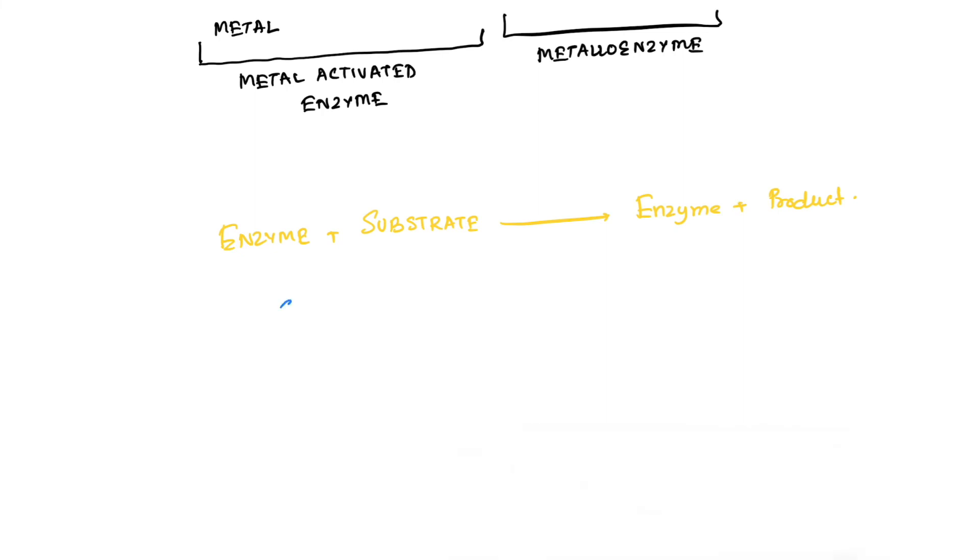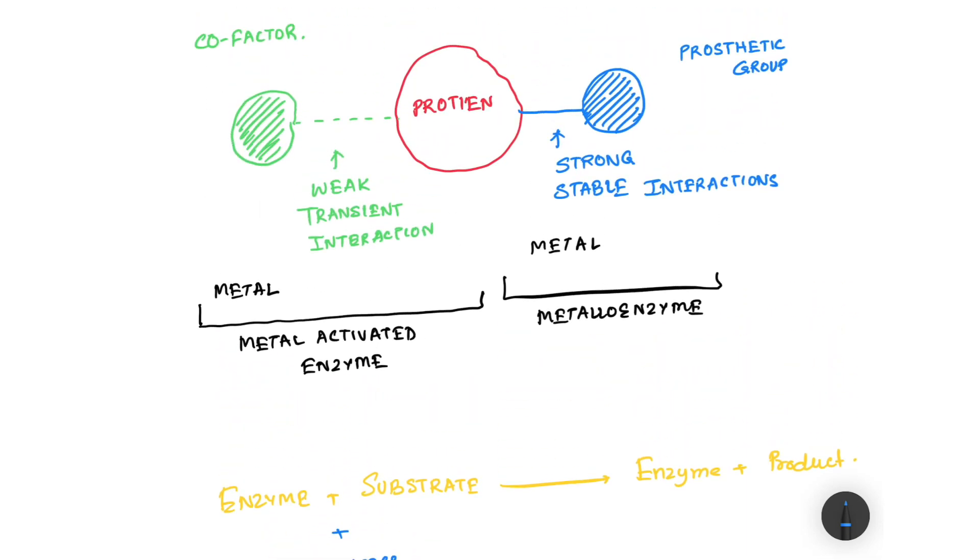Now there are certain molecules known as coenzymes which act as substrate shuttles. That means they bring the substrate to the enzyme so that the enzyme can work on the substrate to make the product. So coenzymes bring the substrate to the enzyme and act as substrate shuttles.